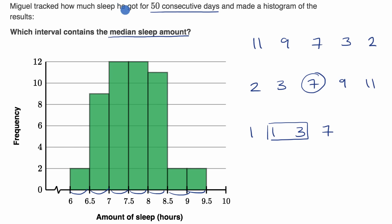So in this situation, Miguel has an even number of data points. So the median would be the mean of the 25th and 26th data point. These would be the middle two data points. So which interval here contains the 25th and the 26th data point?